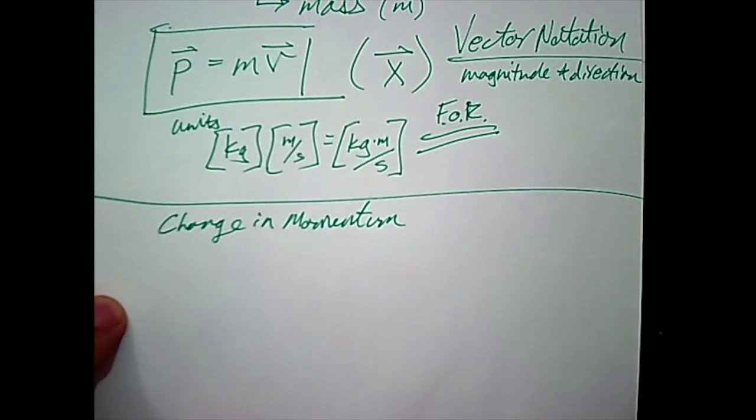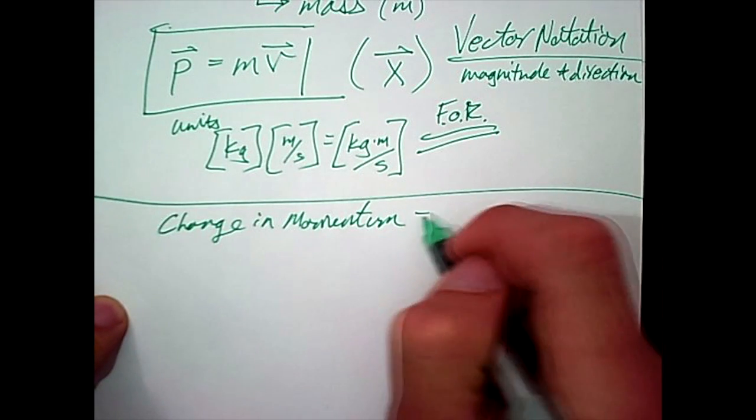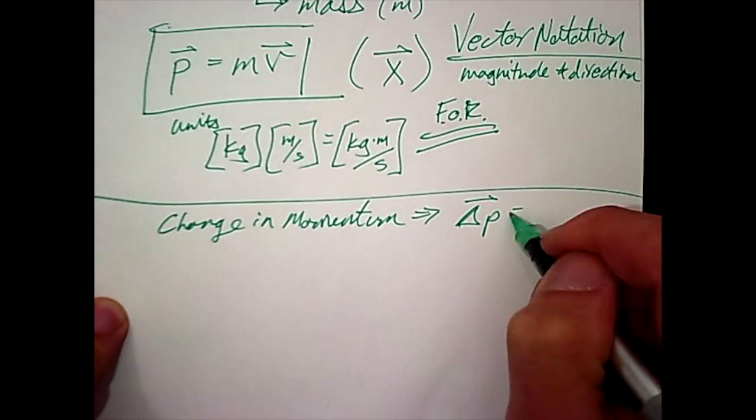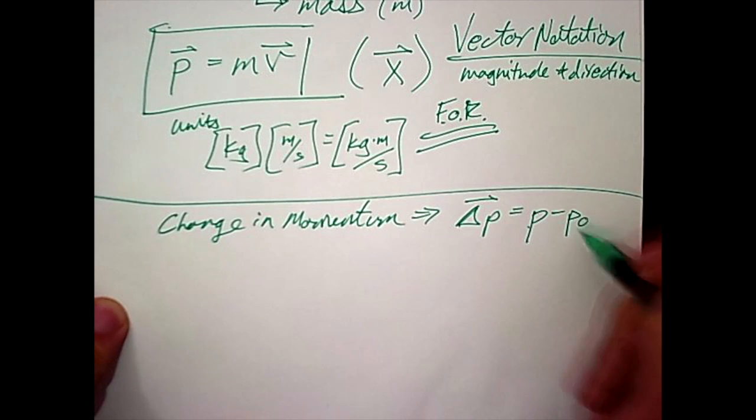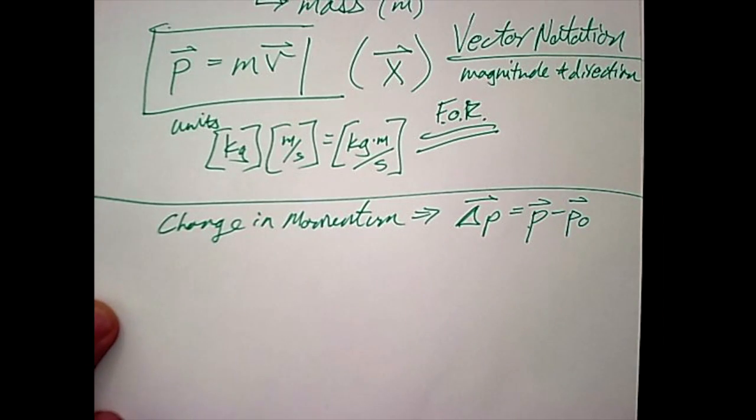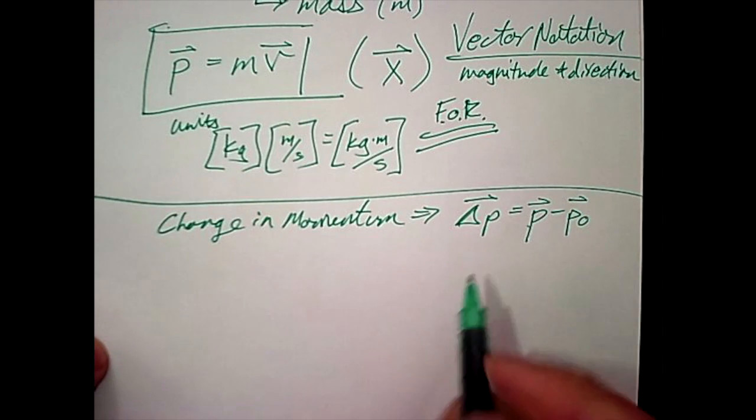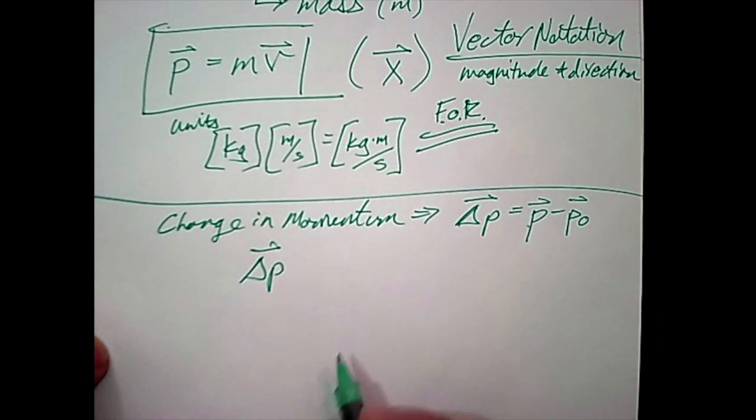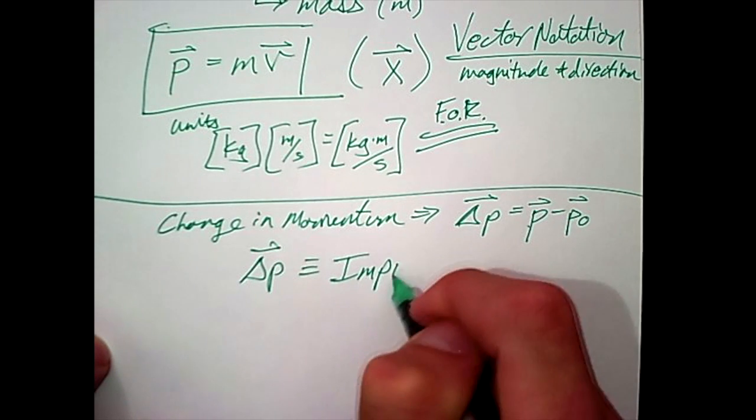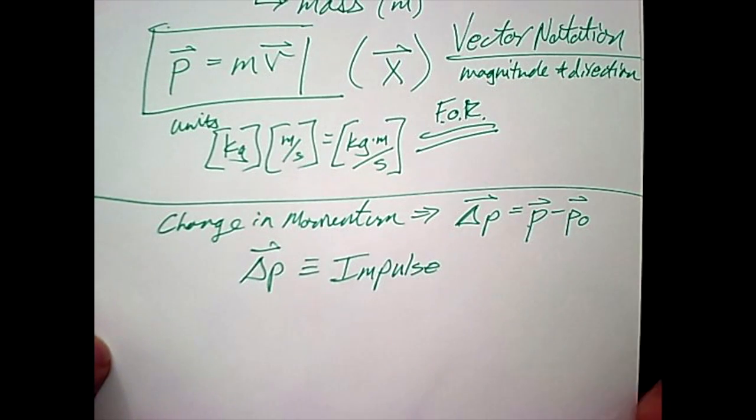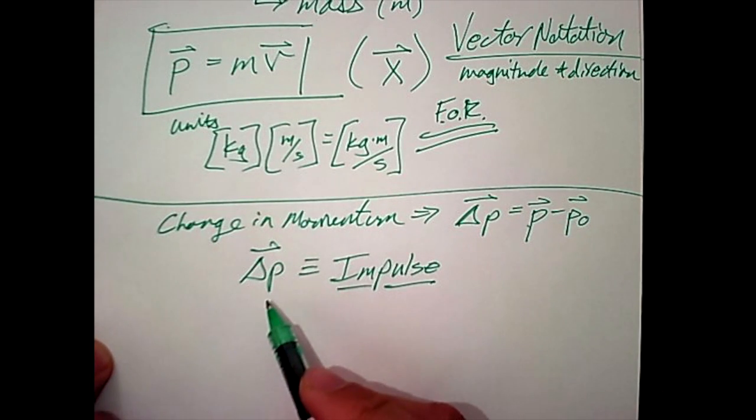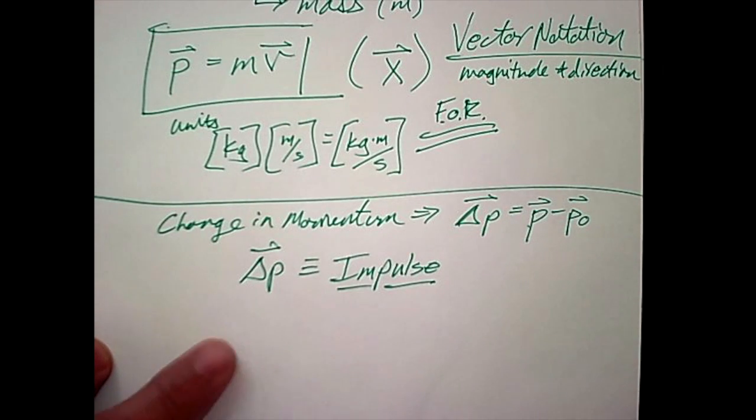The change in momentum, which is also a vector, is therefore delta p. And you can imagine that that would simply be p-final minus p-initial with their vector directions applied. But it's also important to recognize that this has its own term or its own vocabulary word. The change in momentum as a vector is defined as impulse. And so when an object undergoes an impulse, that object changes momentum. And so by definition, impulse is the term.